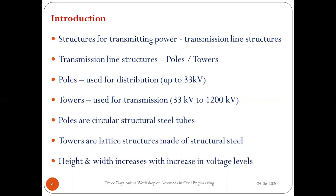Poles are normally used up to 33 kV. Poles are made up of circular cross-sections, either built-up or ready-made sections for smaller kV levels. They can be a single pole, monopole, or bipole. For higher voltage levels, we use lattice-type structures called towers, adopted from 33 kV to 1200 kV. Towers are normally truncated square pyramid shapes with cross arms to hold the conductors and earth wire. The height and width of the tower increases with the increase in voltage levels.